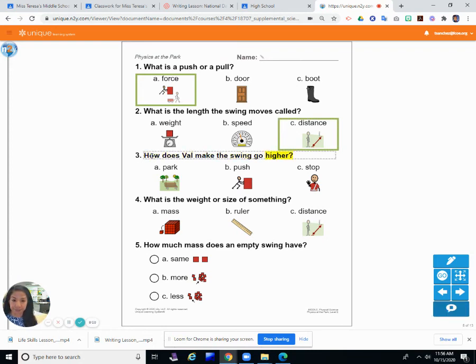Three. How does Val make the swing go higher? How does Val make the swing go higher? By A, park, B, push, or C, stop? What do you think? Park? Does she make it go higher by pushing it? Push. Yes. Push.